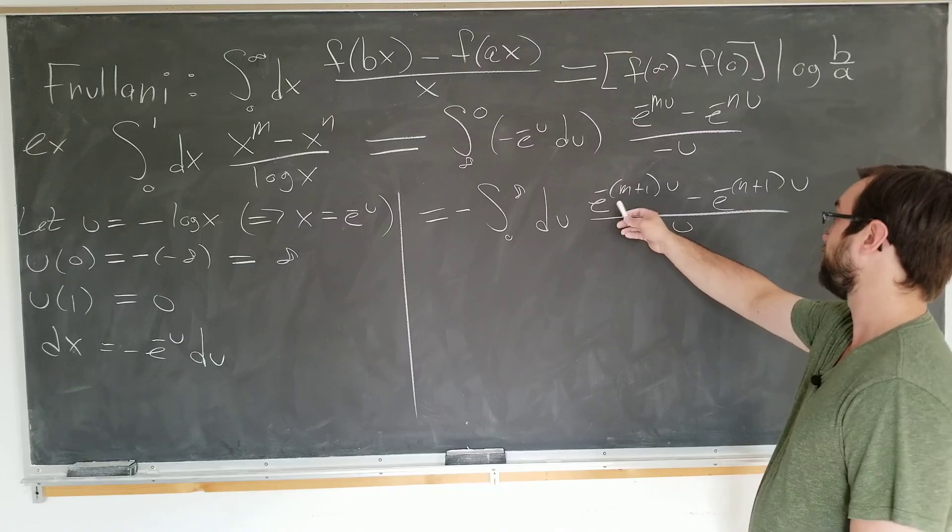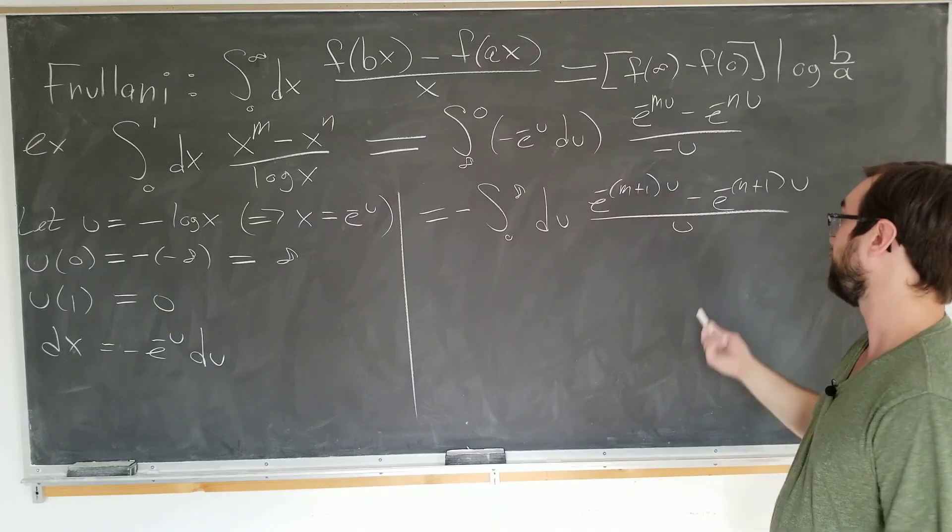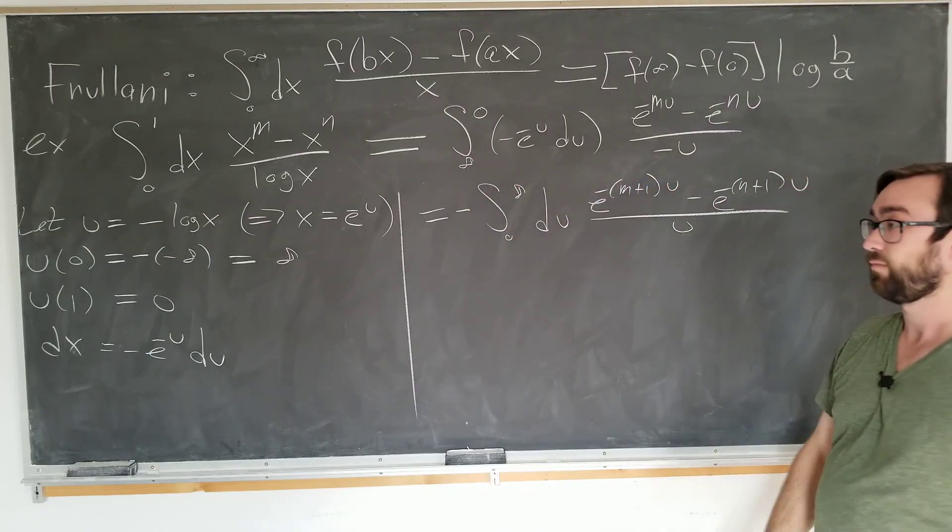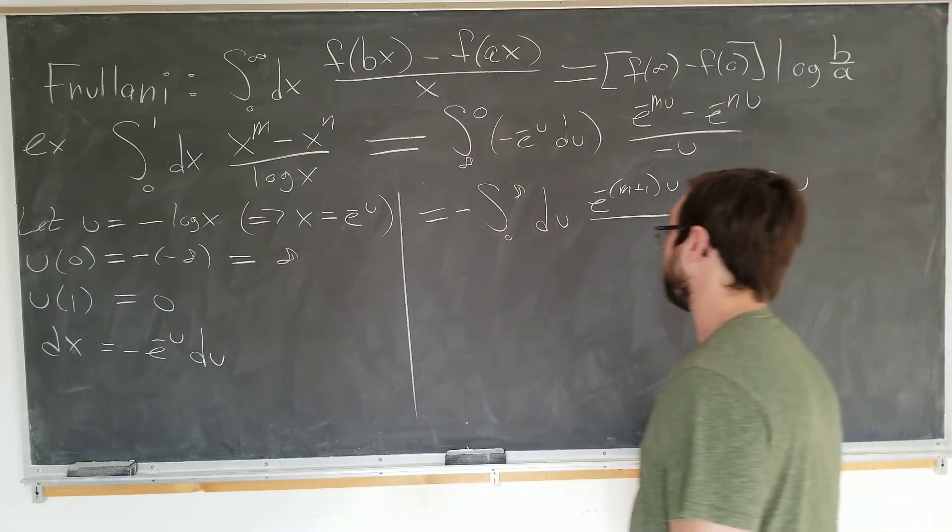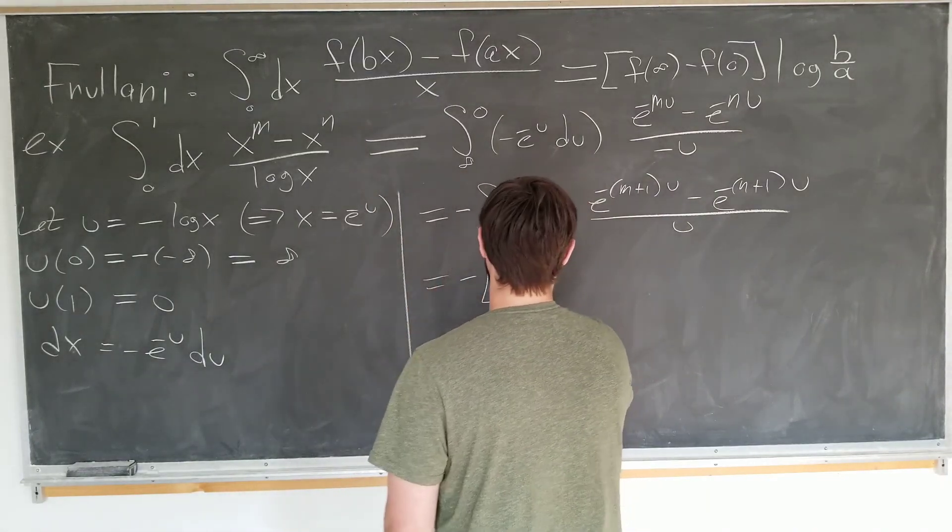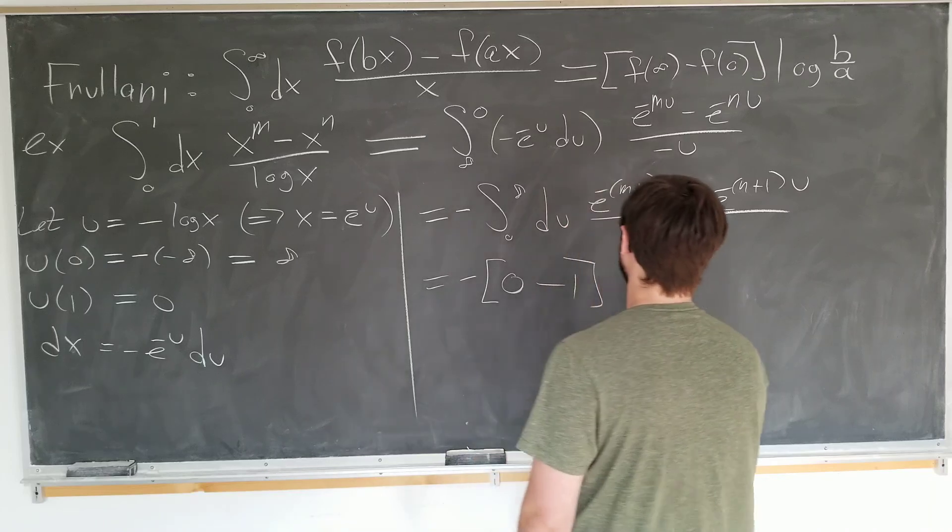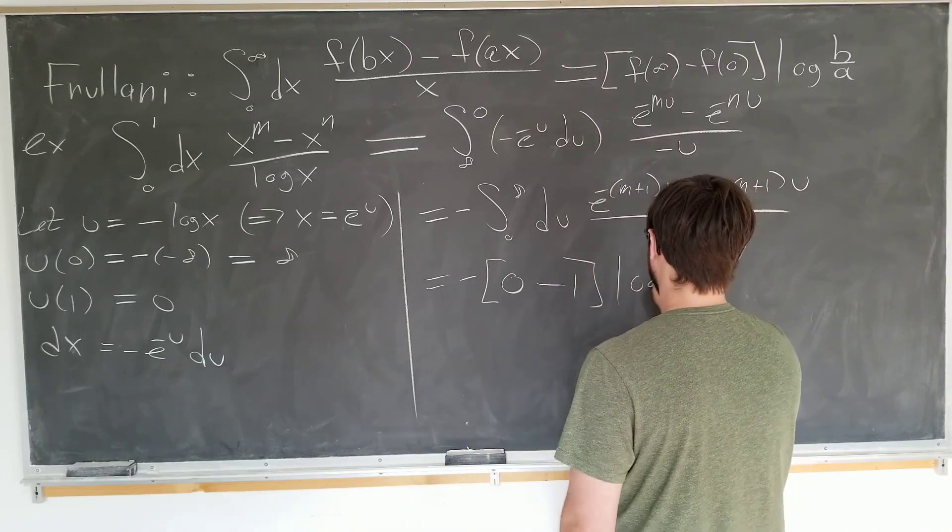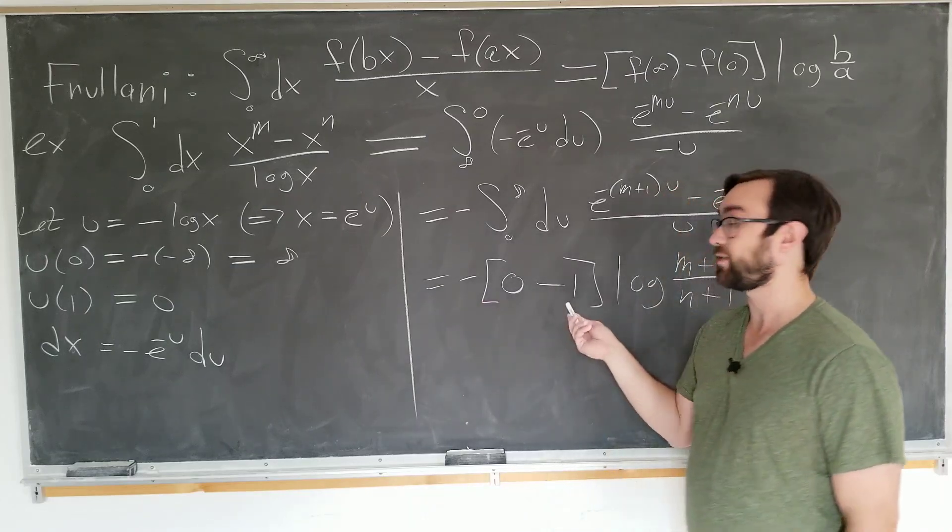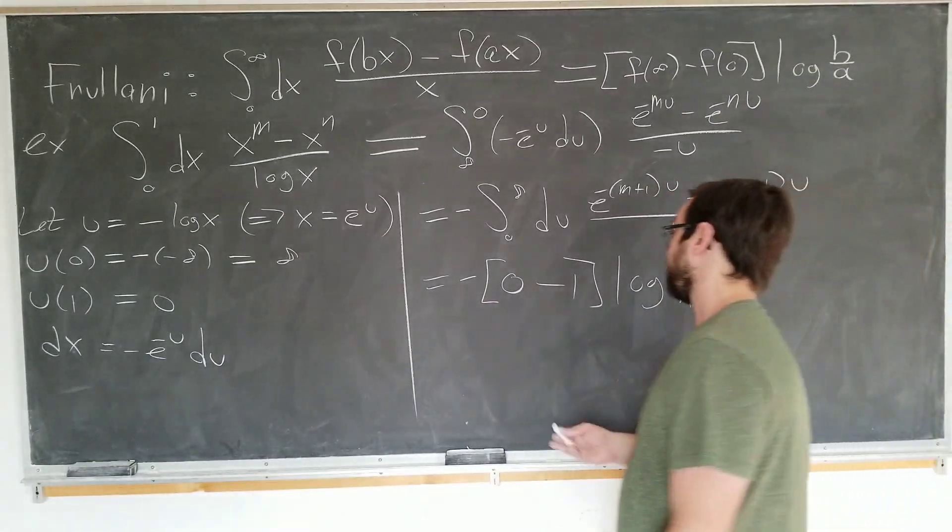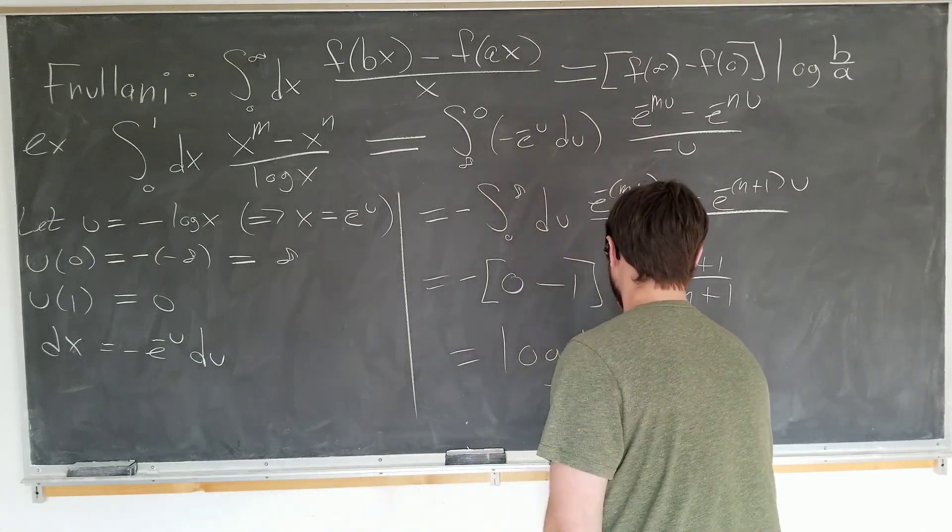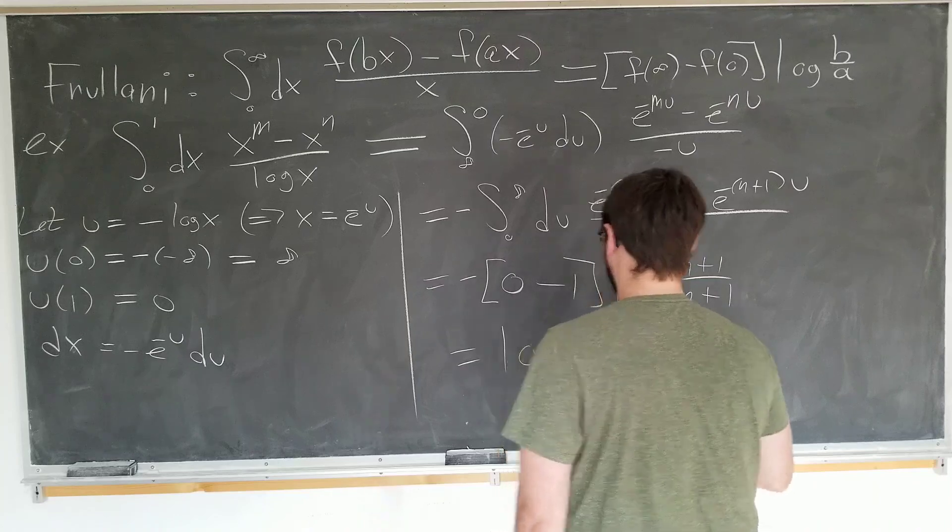f is just e to the minus u with the constant being something plus one, which is exactly what we did before. So let's go ahead and plug it in. This time we get a nice minus sign, and we get a zero minus one, just like before. And we have log of the constants. This time the minus signs actually cancel out nicely. So the final result is log of n plus one over m plus one.